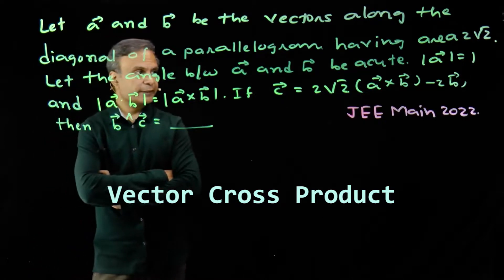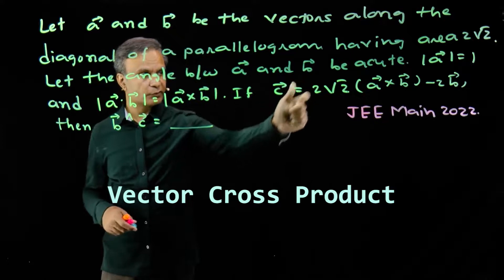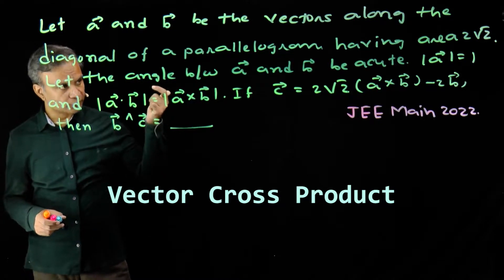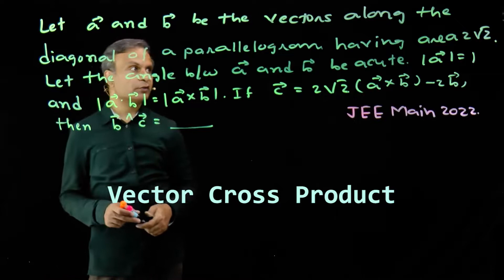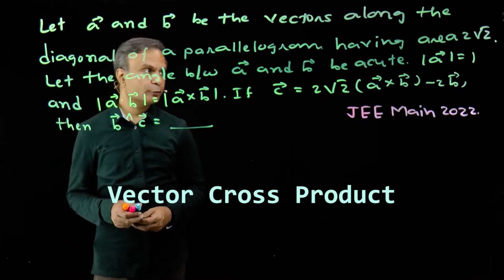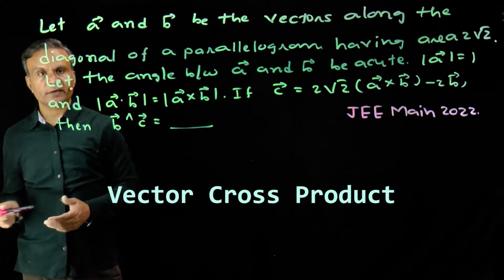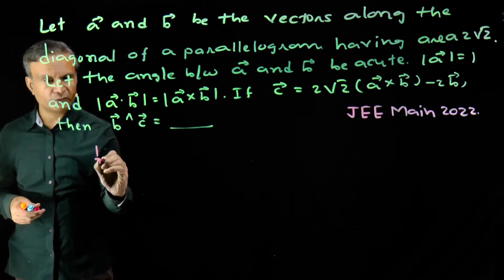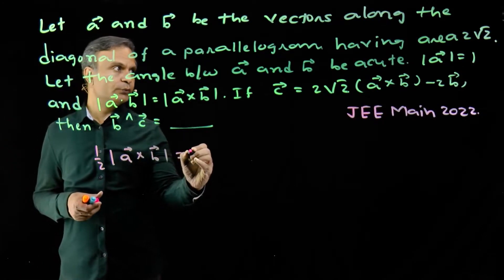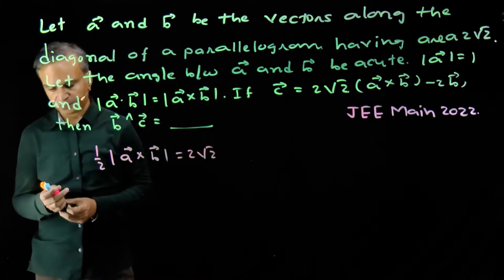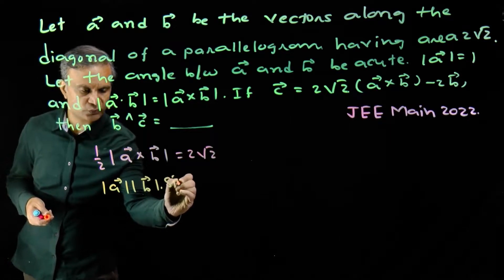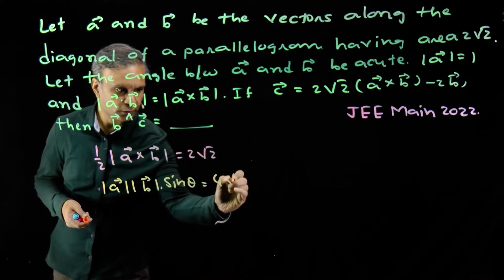How do we find the angle between b and c? Vector c satisfies an equation in terms of vectors a and b. We have the information: modulus of a is 1. The area of a parallelogram whose diagonals are vectors a and b equals (1/2) modulus of (a cross b), and this equals 2√2. So we get modulus of a times modulus of b times sinθ equals 4√2.